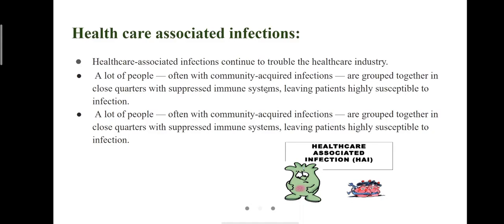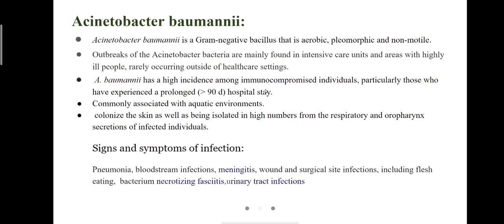Following is a comprehensive list of the common bacteria and viruses causing healthcare-associated infections. The first one is Acinetobacter baumannii, which is a gram-negative bacillus that is pleomorphic and non-motile. It is mainly found in ICUs and areas with highly ill people. People with weakened immune systems are highly susceptible to transmission, and it is rarely seen outside healthcare units. It is a gram-negative bacteria with a high incidence among immunocompromised individuals.